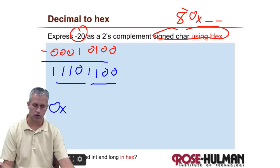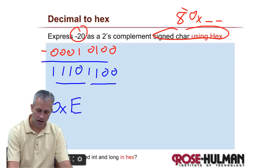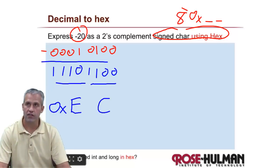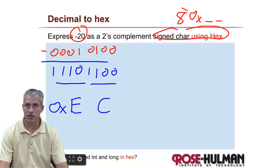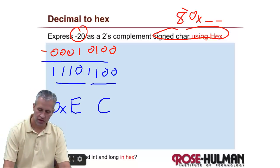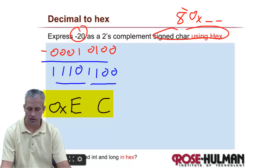Of course, I picked hard ones. So this first chunk is the symbol E, and then that one is the symbol C. Let me think — 12 is C, B is 11, yeah, C. So the answer to this question is quite simply 0xEC.